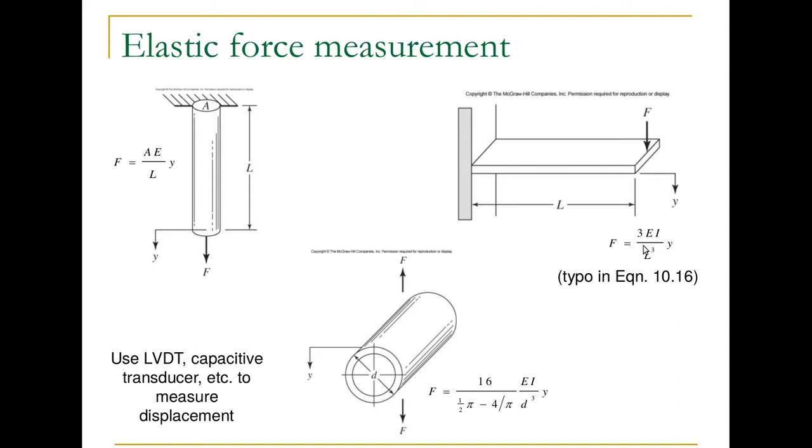And that force is three times modulus of elasticity times the area moment of inertia, so for the cross section of the beam, times the displacement divided by the length cubed.